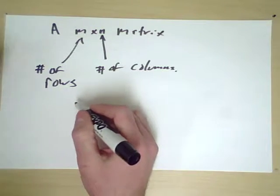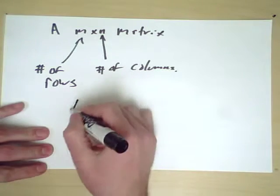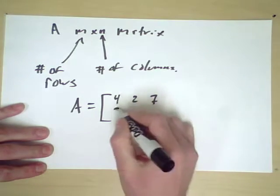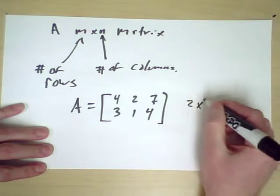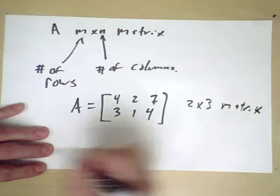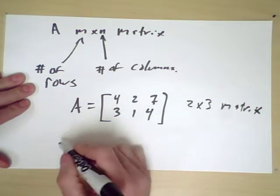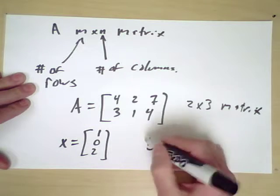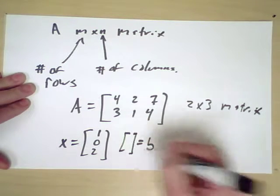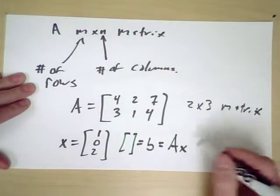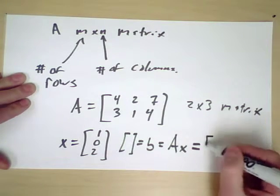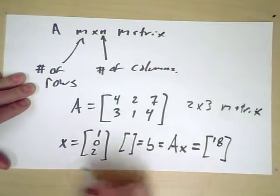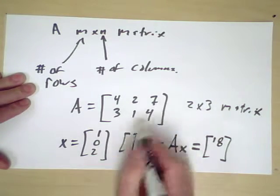So of course this is an operation we can easily do. For example, this is a 2 by 3 matrix. If we have a 3 vector x, we expect to be able to compute b, a 2 vector, as 4, 0, 14 is 18, and 3, 0, 8 is 11.